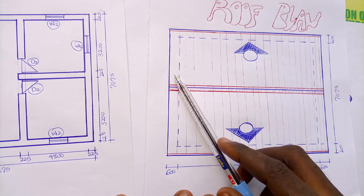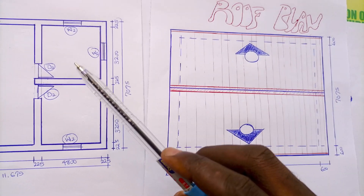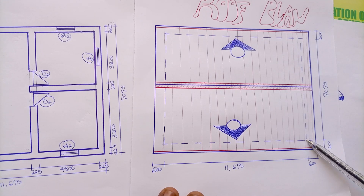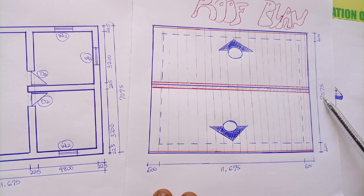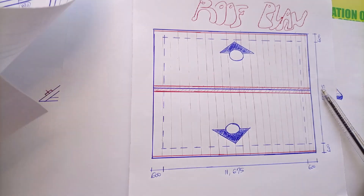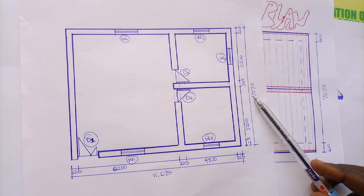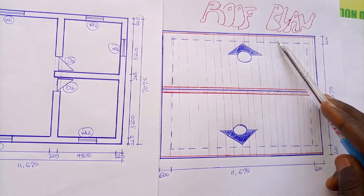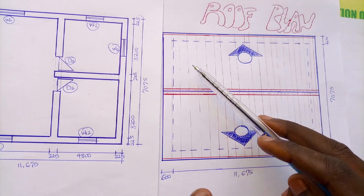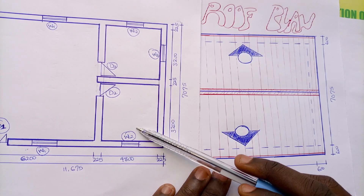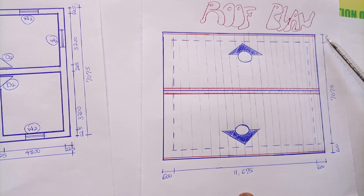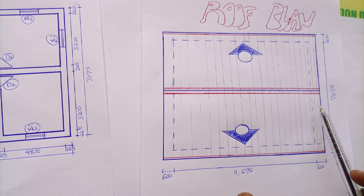This dotted line on the roof plan represents the floor plan itself. The dimension from this point to this point on the roof plan is 7075, which is the same as the width of our floor plan. Anytime you see a dotted line on a roof plan, it is simply indicating the floor plan. This other projection stated at 600mm is what you call the roof projection away from the building itself.